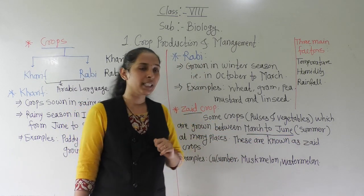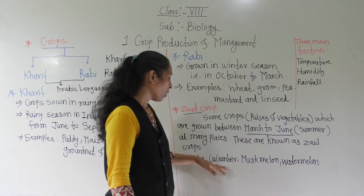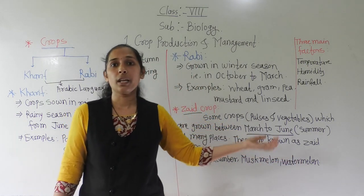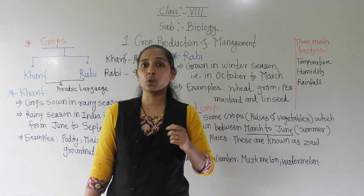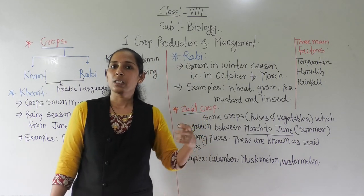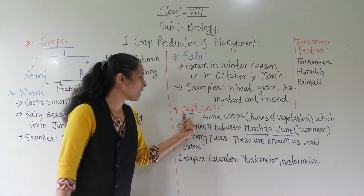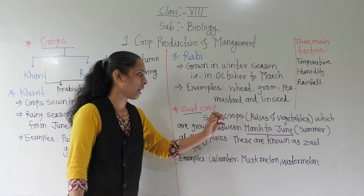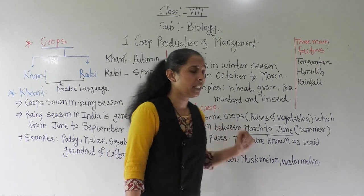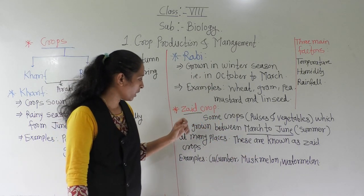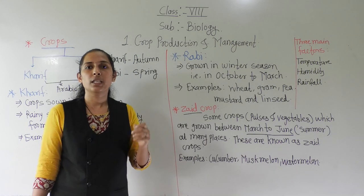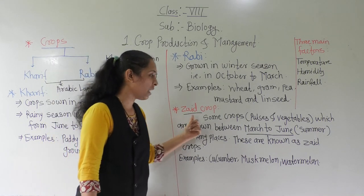Examples of Zaid crops are cucumber, muskmelon, and watermelon. Watermelon is a very well-known example — we have more watermelon during March, April, May, and June because it is a summer season crop, and it comes under Zaid crops. Mostly pulses and vegetables are included in Zaid crops, as well as all types of vines and creepers.